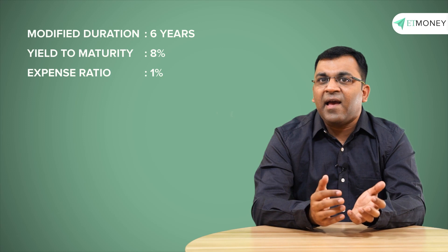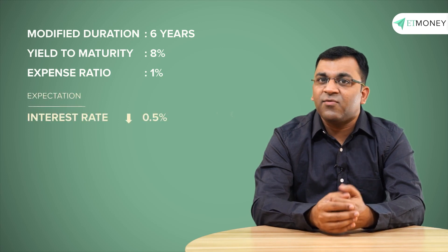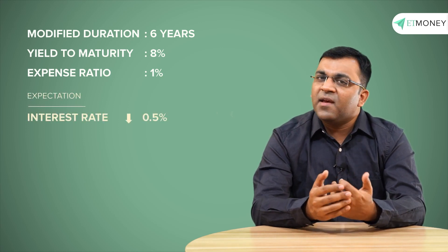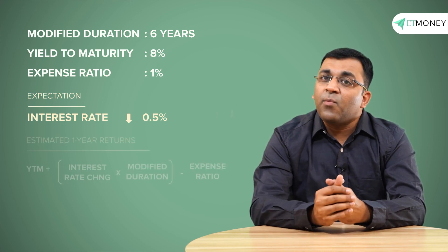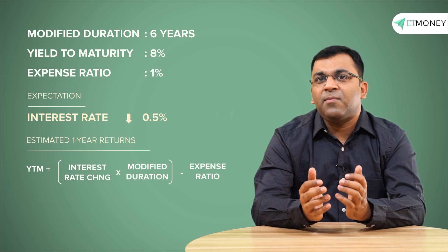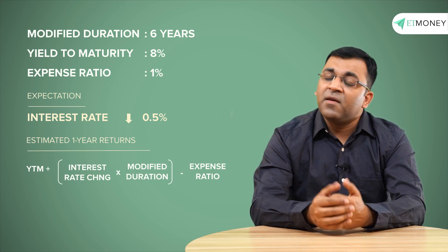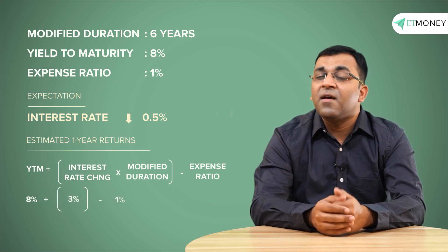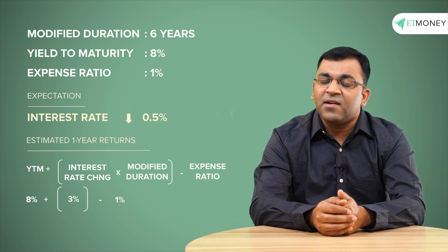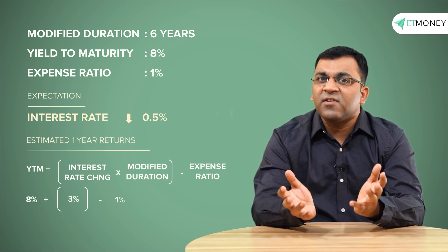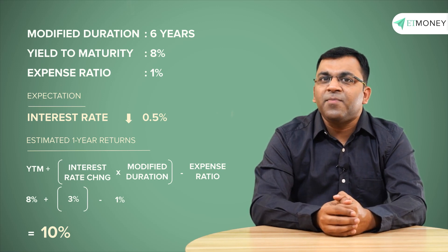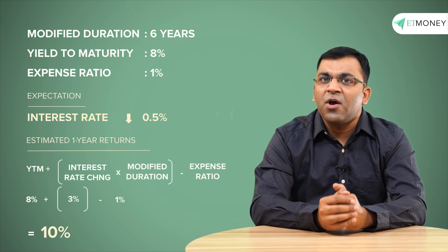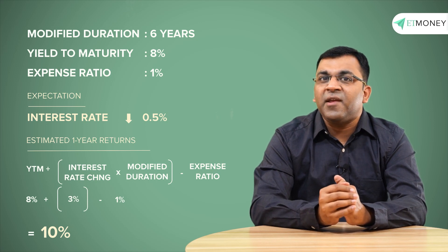Say you select a fund with a modified duration of 6 years and a YTM of 8%. The expense ratio is 1% and there is an expectation that interest rates will go down by 0.5% during the year. Your expected returns would be: YTM + (interest rate change × modified duration) − expense ratio = 8% + (0.5% × 6) − 1% = 8% + 3% − 1% = 10%. So the expected returns for the year from this fund is 10%, assuming your expectation of a 0.5% drop in interest rates materializes.